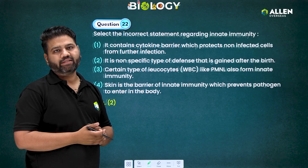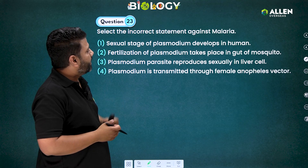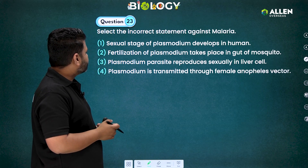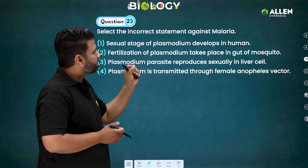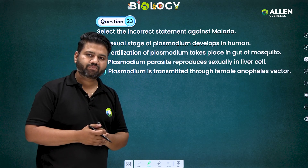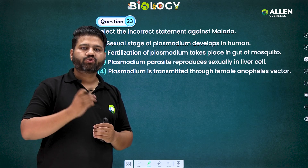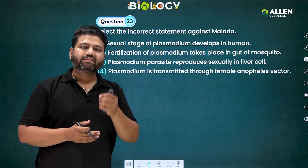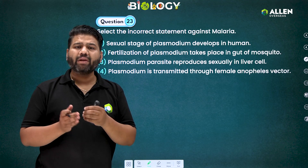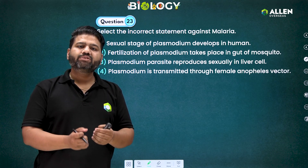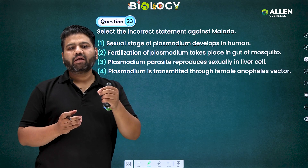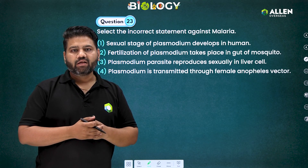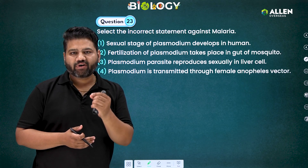Question number 23: select the incorrect statement regarding malaria. The first statement says the sexual stage of Plasmodium develops in humans. After a sporozoite enters the human body, asexual reproduction takes place in liver cells and RBCs. In the RBCs, the sexual stage known as gametocytes — male and female — forms, and when a female Anopheles bites again, these gametocytes enter the mosquito. So the sexual stage does form in humans, making statement one correct.